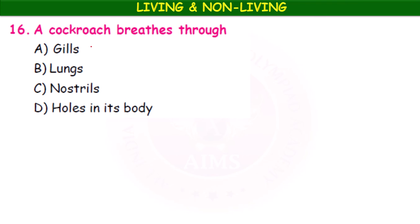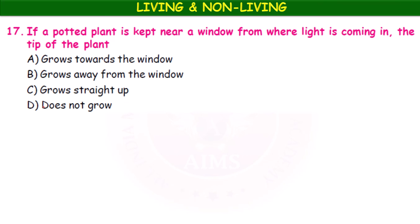A cockroach breathes through — gills, lungs, nostrils, or holes in the body? A cockroach is an insect; its respiratory organs are holes in the body, also called spiracles. If a potted plant is kept near a window where light is coming in, the tip of the plant grows towards the window — this is called phototropism.